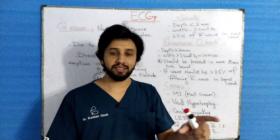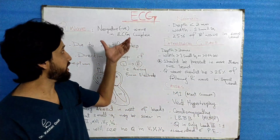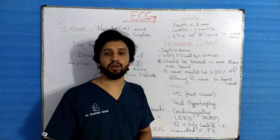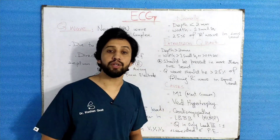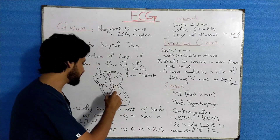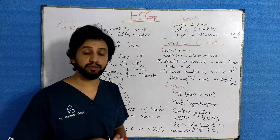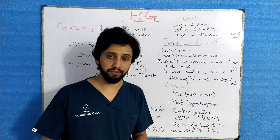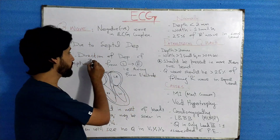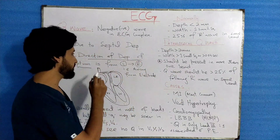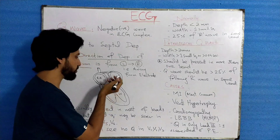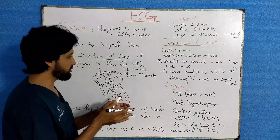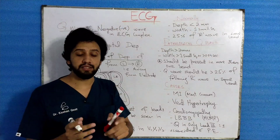The Q wave is part of the ECG complex — the PQRS complex. It is the negative part of the ECG complex, produced due to depolarization of a part of the heart called the septum. This Q wave is produced due to depolarization of the septum, and the direction of depolarization of the septum is from left to right — from the left part of the heart towards the right.